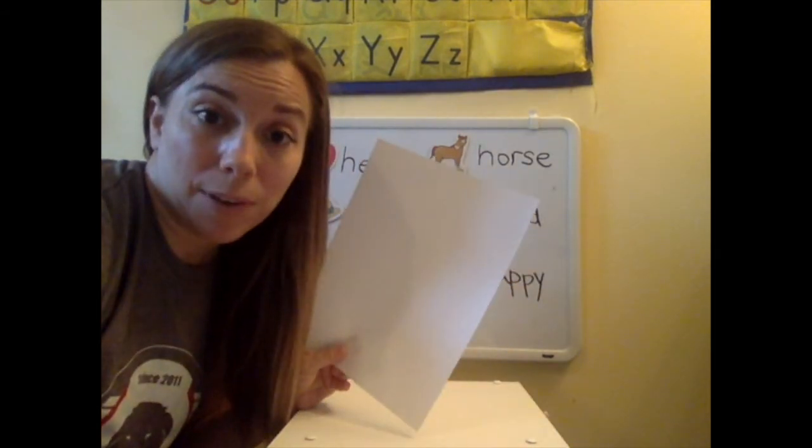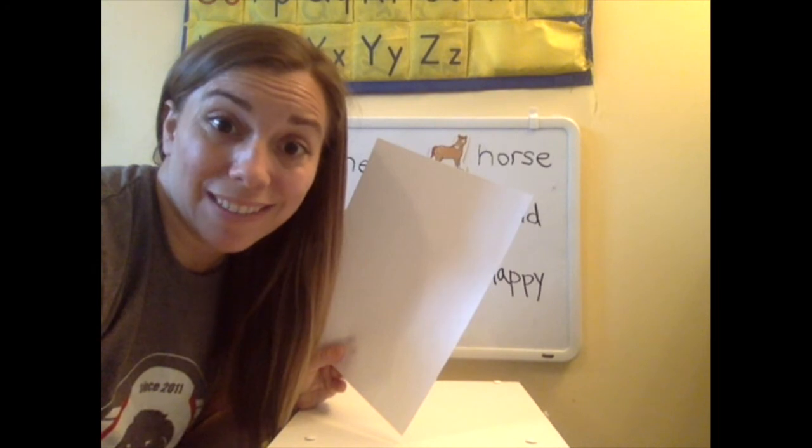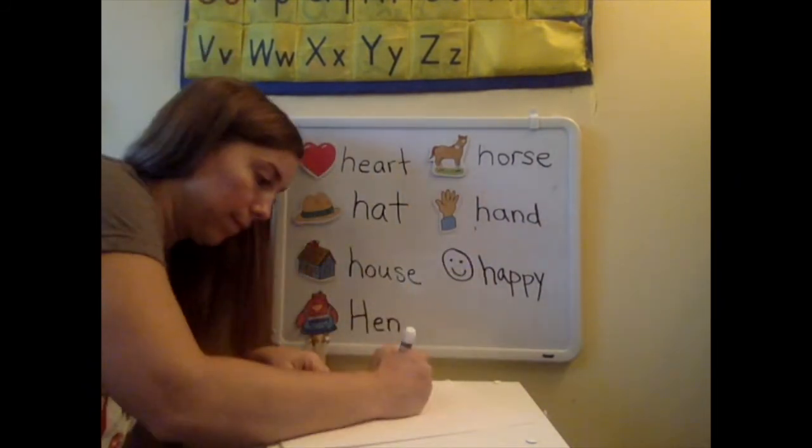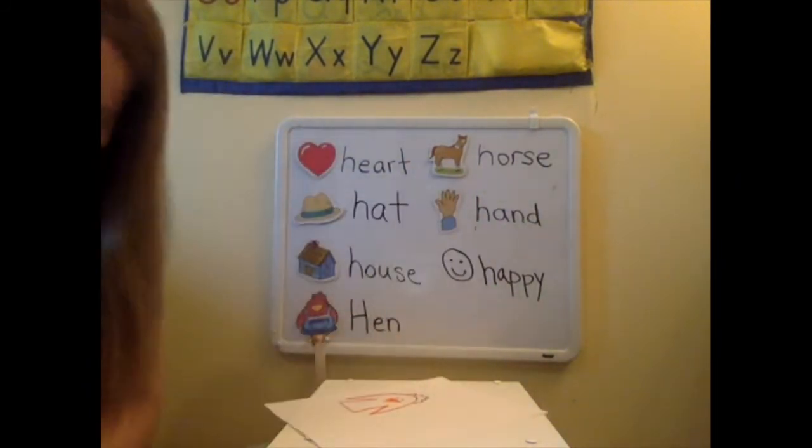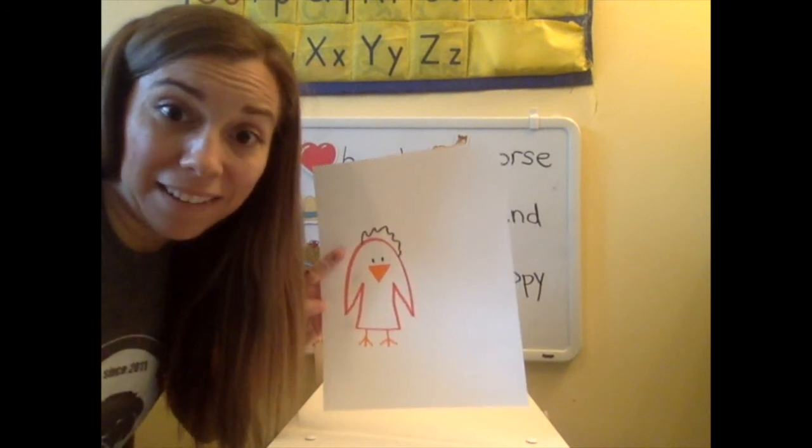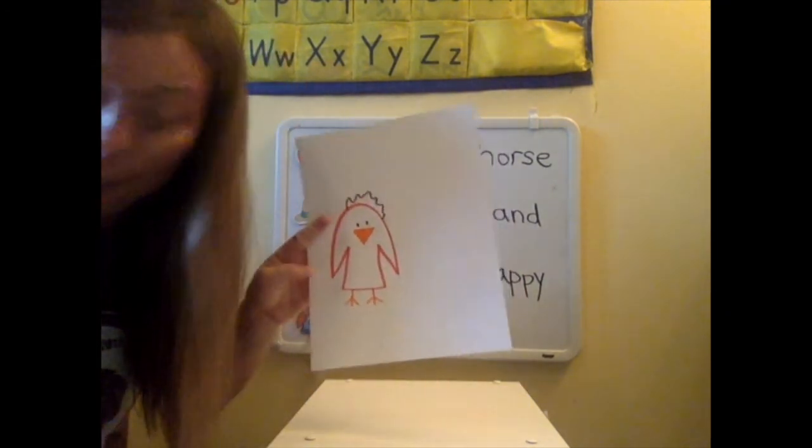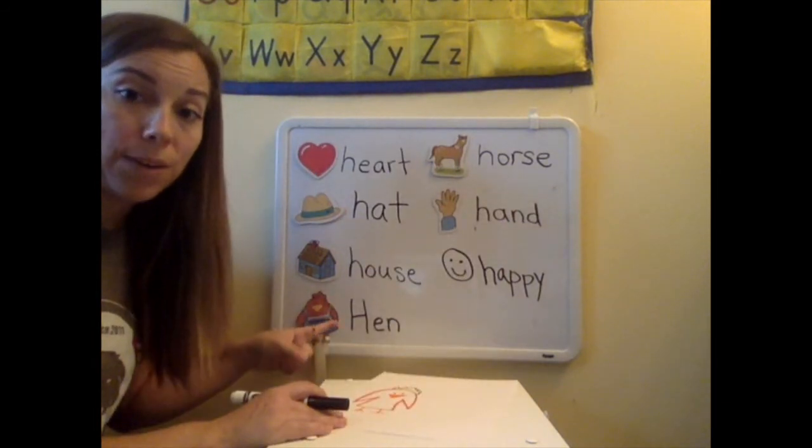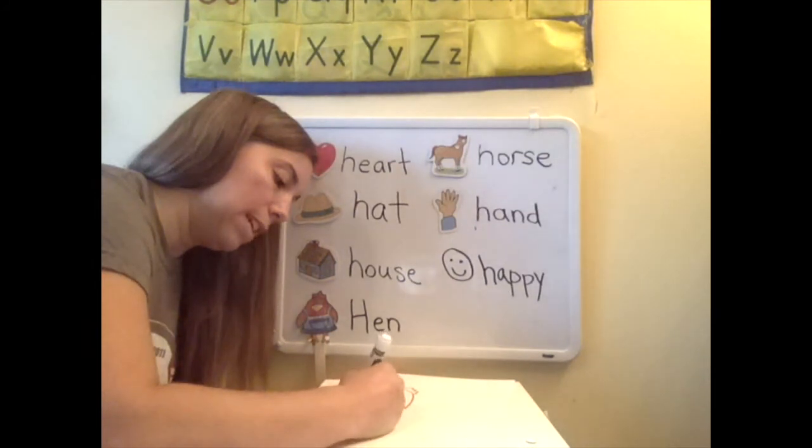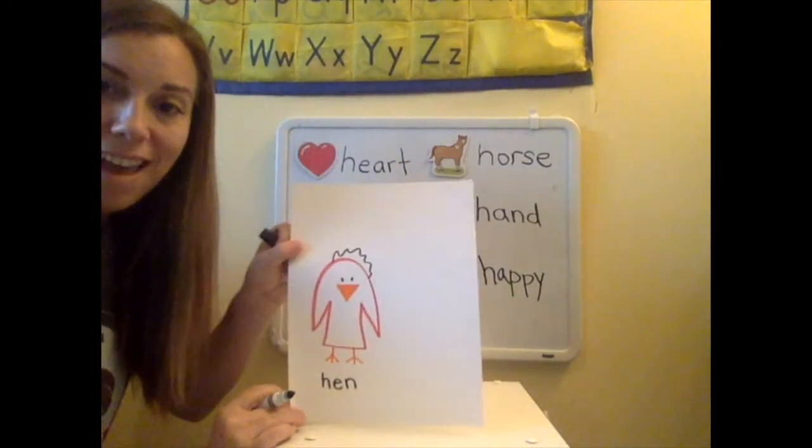I have a piece of paper and I have some markers. So I think I'm going to make a picture of something that starts with the letter H. Do you know what I made? I made a hen. Or at least I tried to. I did my best to make a hen. And I'm going to write the word hen. H E N. Hen.